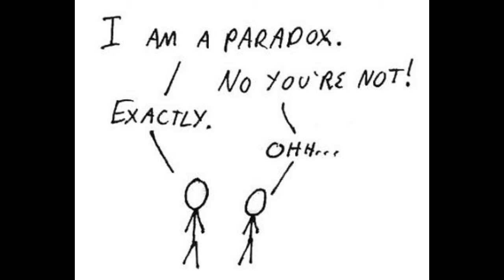This video is about a probability paradox that has confused many people, including some with higher degrees in mathematics. Commonly called the two children problem, or Mr Smith's children, it was posed in the late 1950s by the mathematician Martin Gardner in the Scientific American magazine. Number nerds have been debating it ever since, but I hope here to show that it has a straightforward explanation that an average year seven student, or sixth grader, could understand.